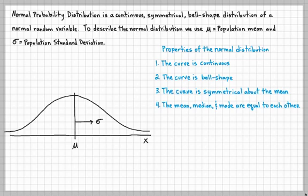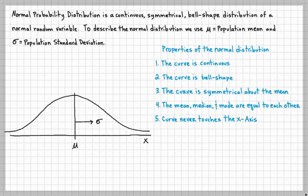That's no surprise. If you looked at skewedness, you'll know that the mean, median, and mode are all the same when you have a normal, symmetrical curve. And number five: the curve never touches the x-axis.